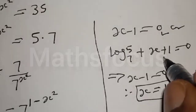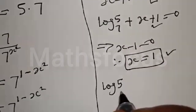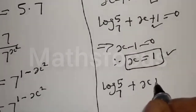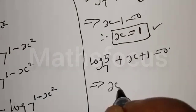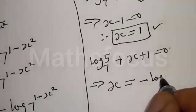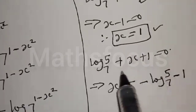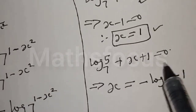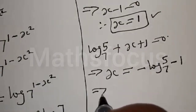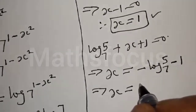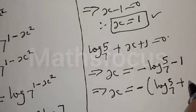Then let's take a good look at the other factor. We have log base 7 of 5 plus x plus 1 equal to 0. Let's make x the subject of the formula. x equals minus log base 7 of 5 minus 1. If plus log base 7 of 5 crosses to the other side it becomes minus, and if plus 1 crosses it becomes minus 1.